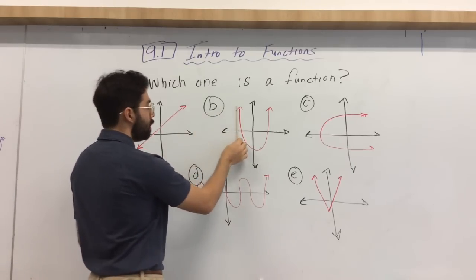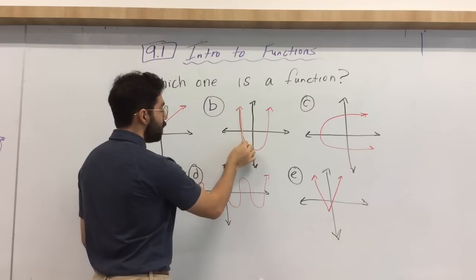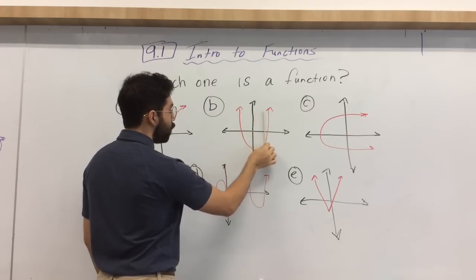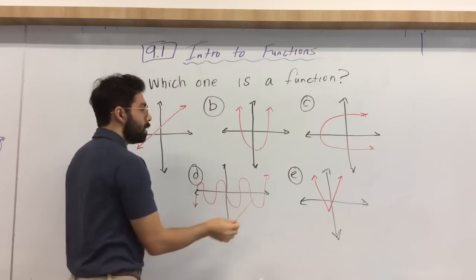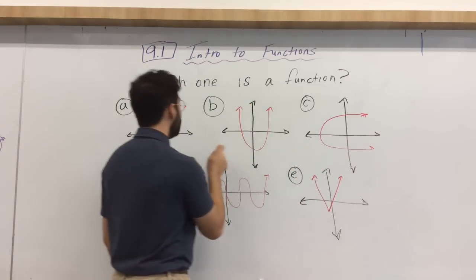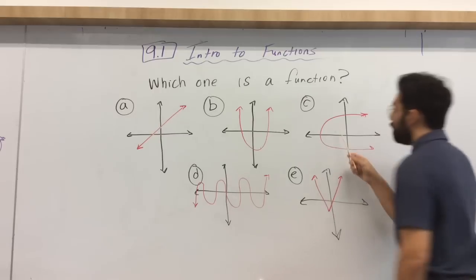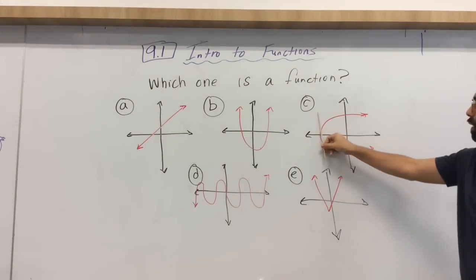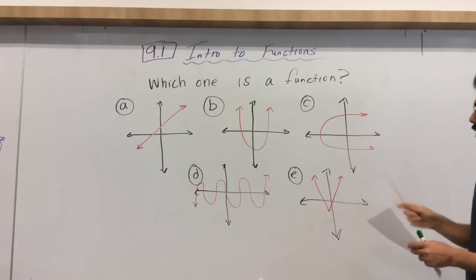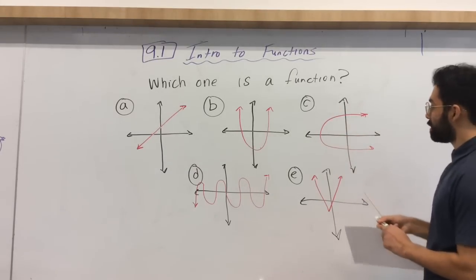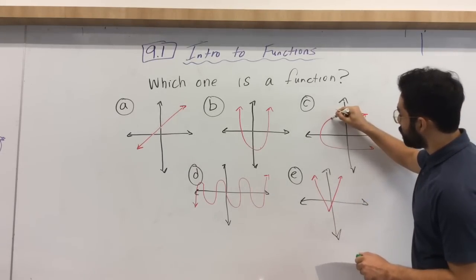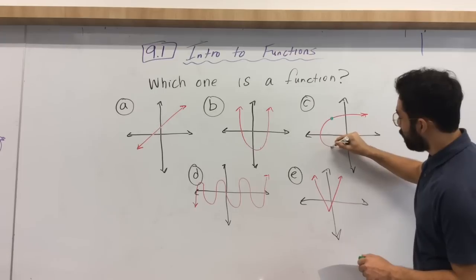So if you go into b, if we go from left to right, your x's will not have more than one y. Okay? If we go into c, so a and b so far are functions. If we go into c, if I go from left to right, well, guess what? This chopstick here, which is what I'm using for my vertical line test, that will end up being touched twice, here and here.